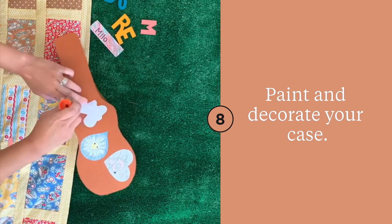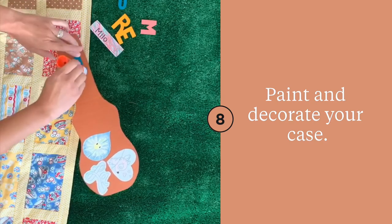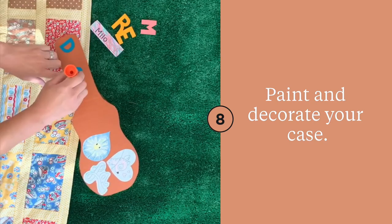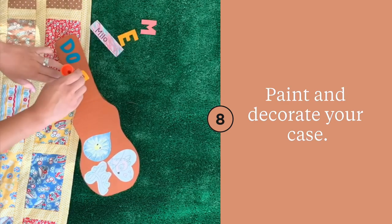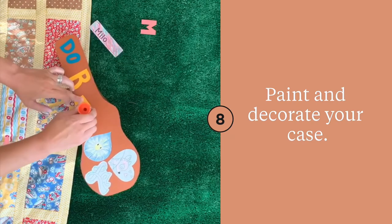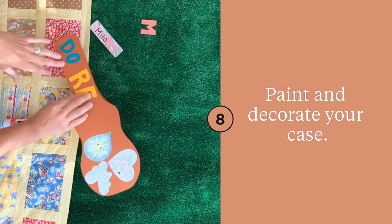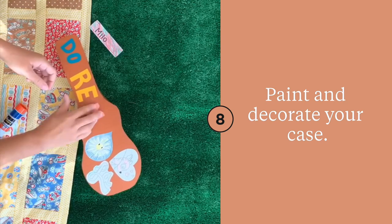Then we added these fun coloring page patches from the Sound of Music coloring sheet that you can find at the link in the description for this video. The do-re-mi are just simply cut out of construction paper. But you could also use letter stickers, washi tape, glitter, anything that you could think of to decorate your cases.